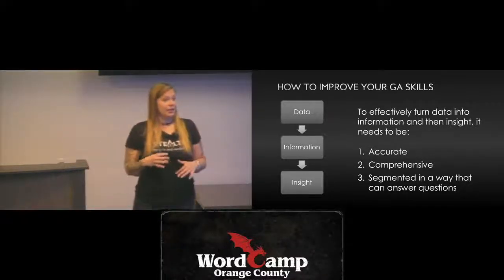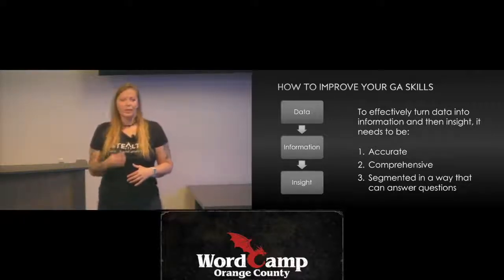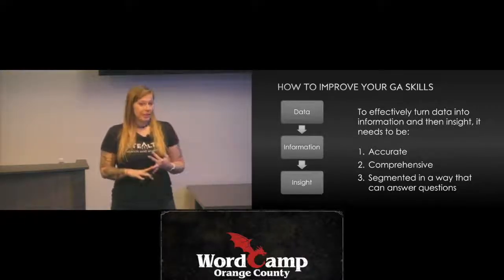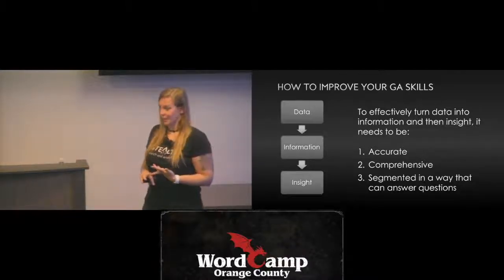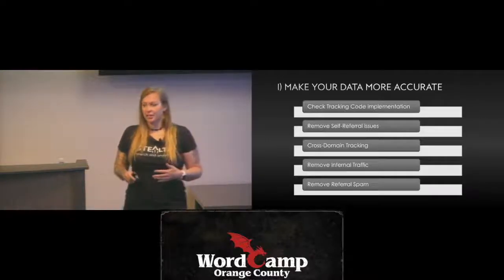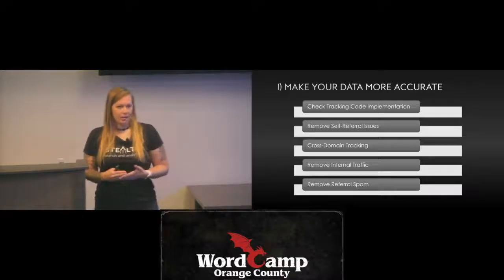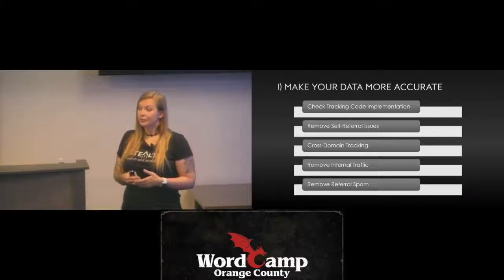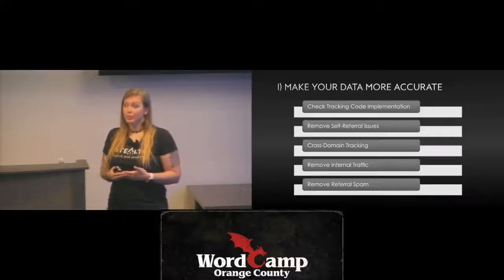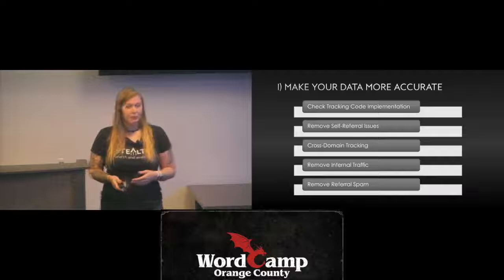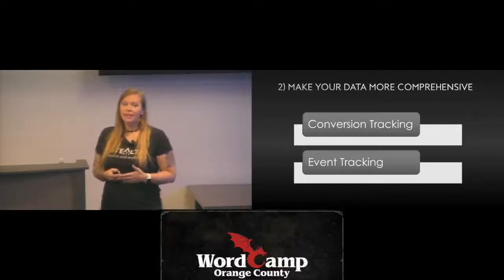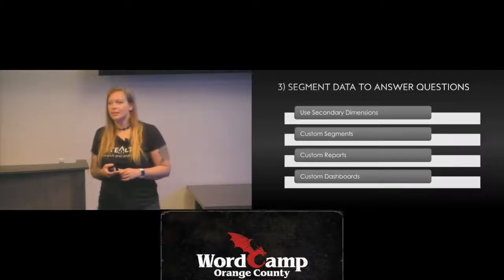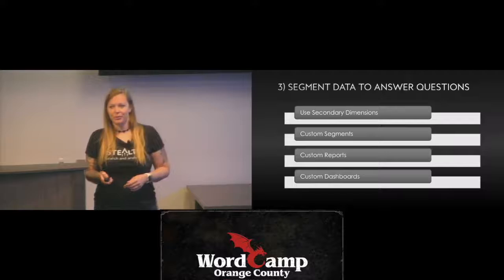How do we turn data into information and information into insight effectively? There are three things that are important: your data needs to be accurate, comprehensive, and segmented in a way that can answer the questions you need answered. That's what we're going to go over today. We'll cover ways to make your data more accurate — checking your tracking code implementation, removing self-referral issues, cross-domain tracking, removing internal traffic, and removing referral spam. To make it more comprehensive: conversion tracking and event tracking. And to segment your data to answer questions: secondary dimensions, custom segments, custom reports, and custom dashboards.